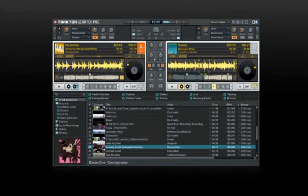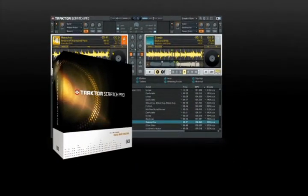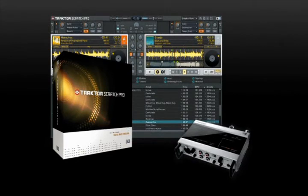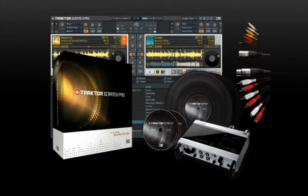Let's take a look at what comes in the box. Tractor Scratch Pro includes everything you need for digital DJing with turntables or CD players. It comes with the all-new Tractor Pro software, the professional Audio 8 DJ USB sound card, two timecode vinyls and CDs, and special multi-core cabling to make connecting everything a snap.